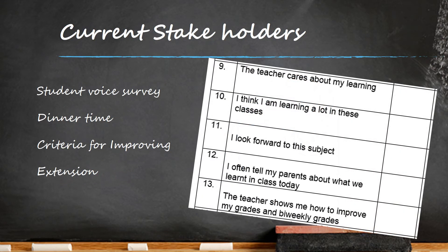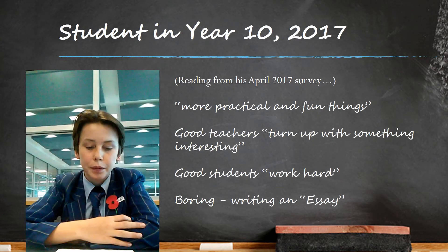The stakeholders in my class are the students first, and I survey them to find out if they are looking forward to class, if they talk about it with their parents, or if they even really care about their learning as much as I do. I'm always getting the same results for a couple of these questions in the last 10 years I've done it. And I'm worried that if I always do what I've always done, then I'll always get what I've always got. Here's one of my best students explaining what he meant from some of his ideas in the April 2017 survey.